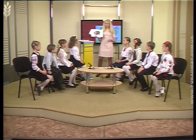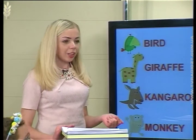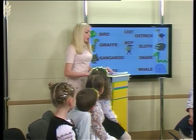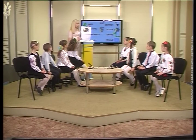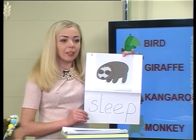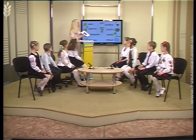You are right. Look at all these exotic animals. What can we say about them? They are different and they can do different actions. For example, a sloth can sleep. 'Can' means 'може' in Ukrainian. So what about other animals?